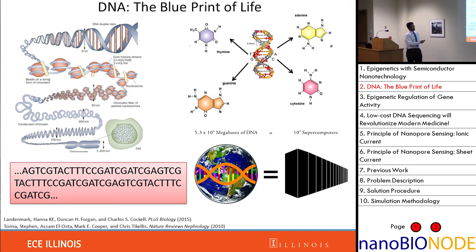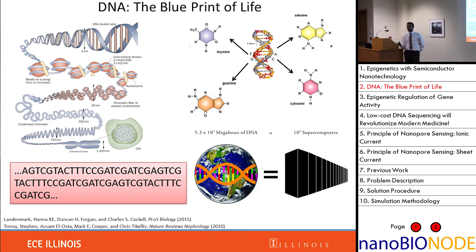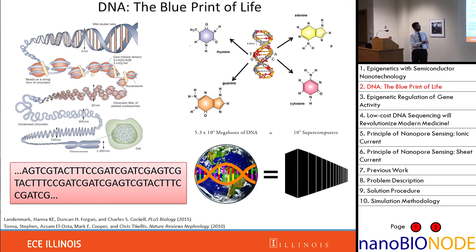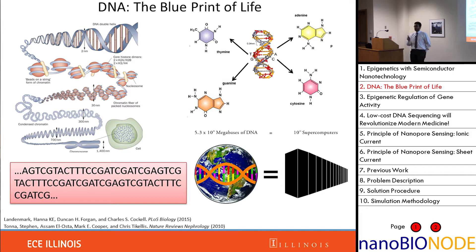An interesting tidbit: recent research showed that if you want to store all the genomic information of every single living being on Earth, it would be on the order of 5.3 × 10^31 bases, which would take about 10^21 supercomputers to just store, let alone process.